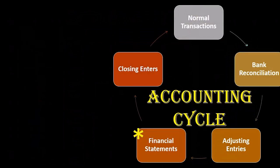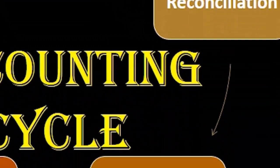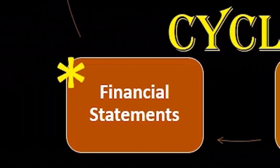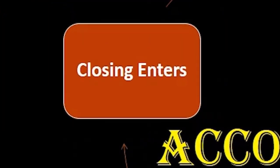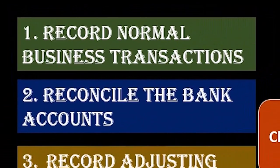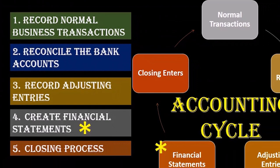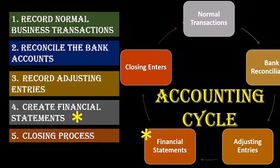So those are the five steps to keep in mind. When you have a broad view of what the accounting process is, you want to have these five steps in mind: starting with normal business transactions throughout the month, then at end of month reconciling the bank accounts, then doing the adjusting journal entries, then the financial statements — the main event — and finally the closing process. Then we can start over and do the next period again in that order.